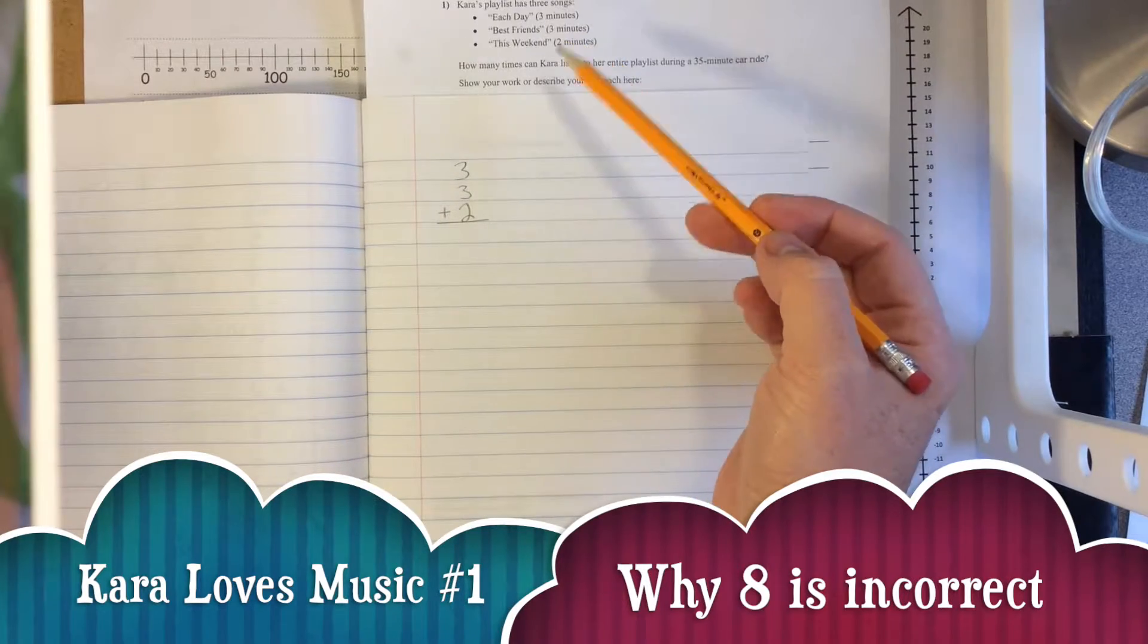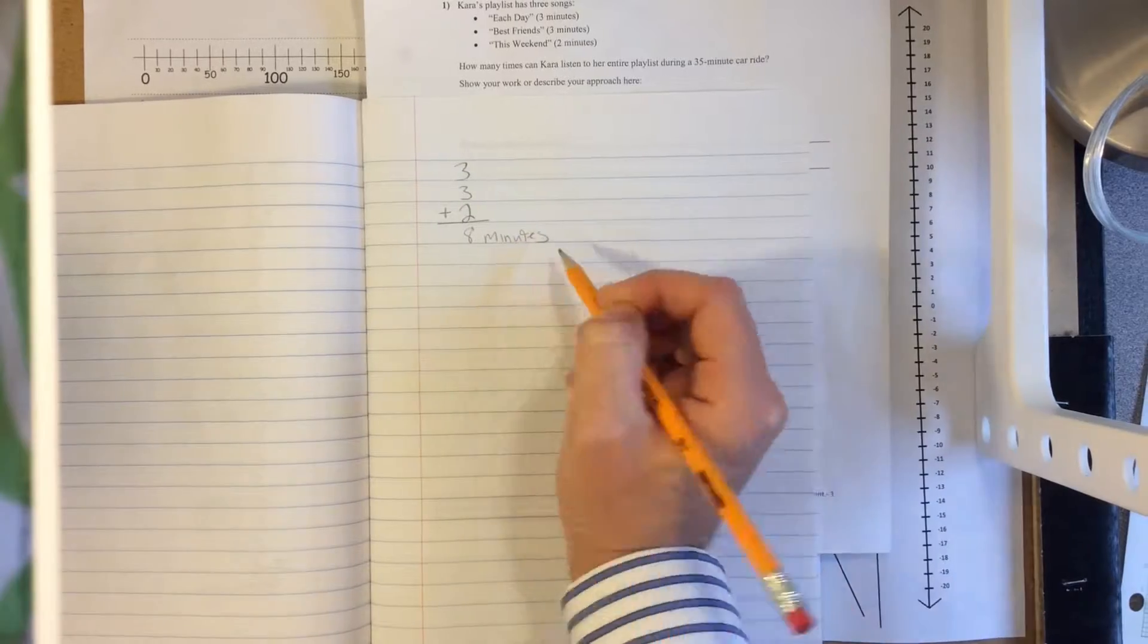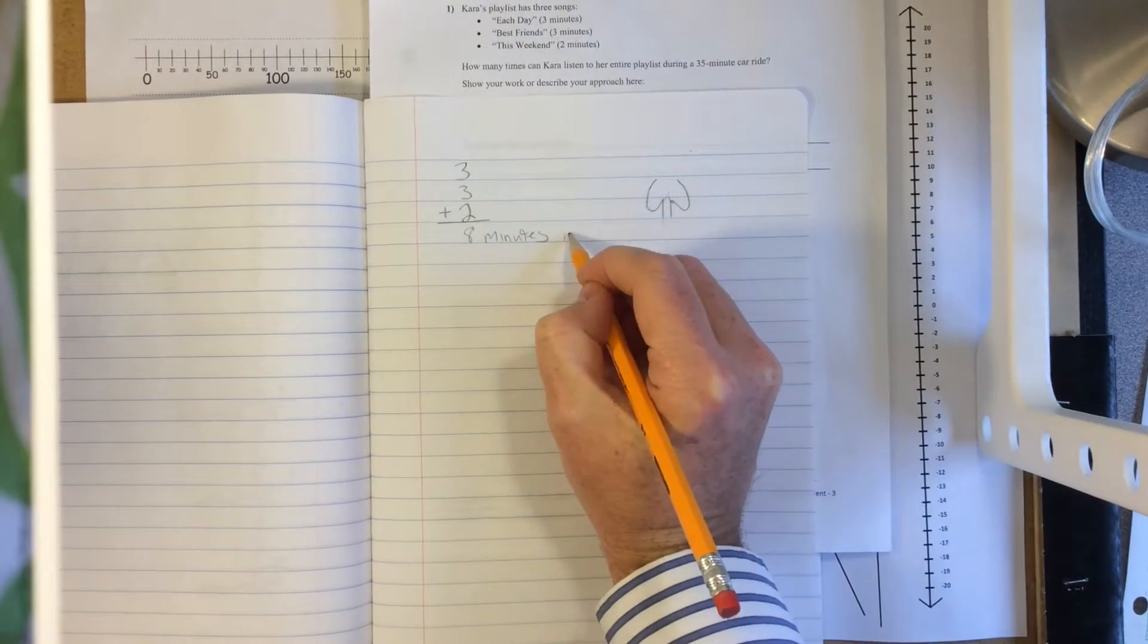So we have 3 songs in a 35 minute car ride. We have 3 minutes, 3 minutes, 2 minutes. So that's 8 total minutes, 3 plus 3 plus 2.